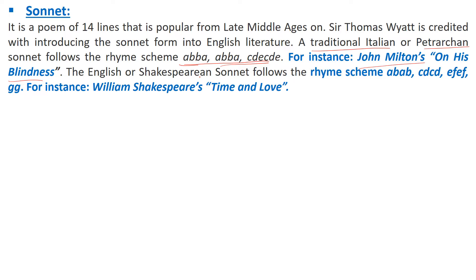There is also the English sonnet, known as the Shakespearean sonnet. Its rhyming scheme is ABAB, CDCD, EFEF, and GG. In the Petrarchan sonnet you have a sestet and an octave — two parts. In the Shakespearean sonnet there are three stanzas of four lines each, and a final couplet. Shakespeare's sonnets such as Let Me Not to the Marriage of True Minds are important sonnet sequences.